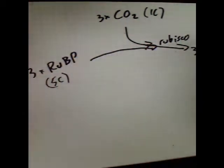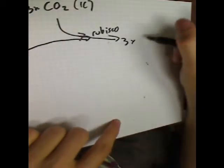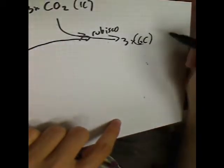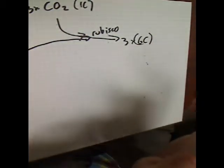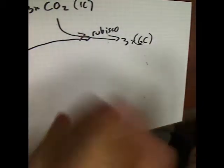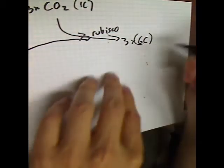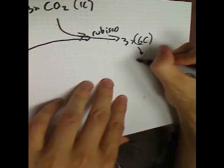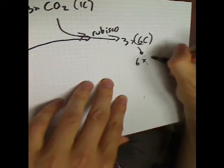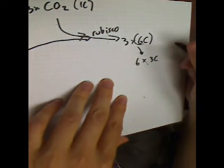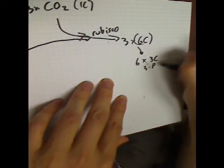So we end up with three molecules of something that has six carbons. That six-carbon molecule is completely unstable and breaks down basically immediately into two three-carbon compounds each, giving us six molecules of a three-carbon compound called 3-phosphoglycerate, or 3-PG.